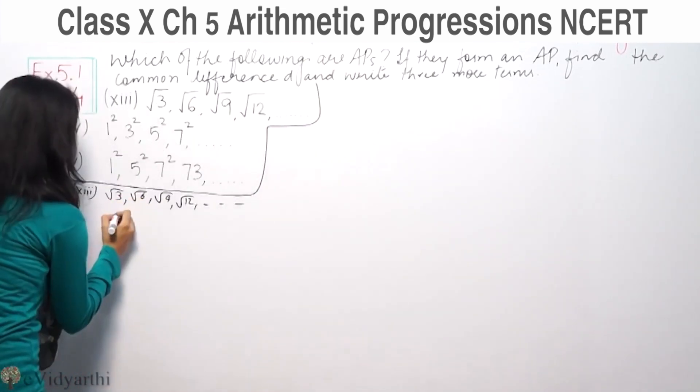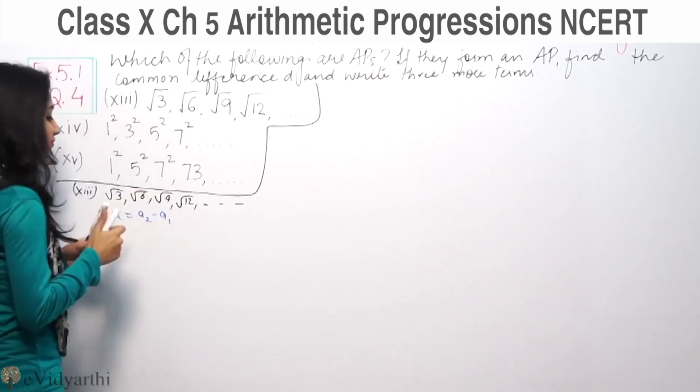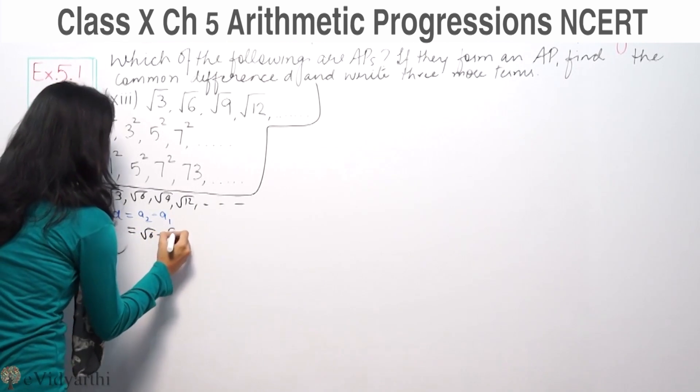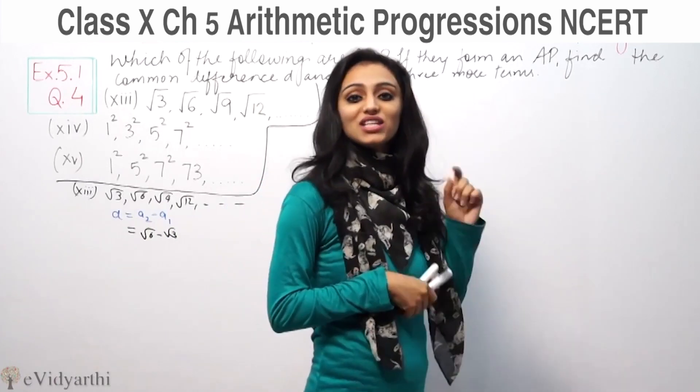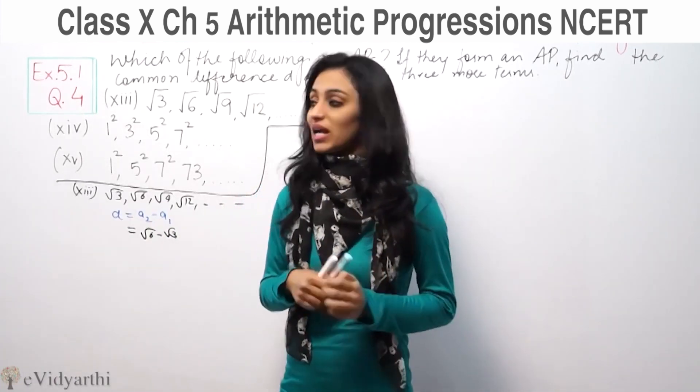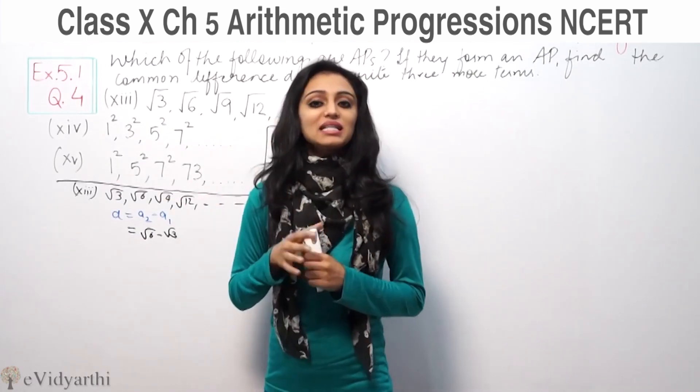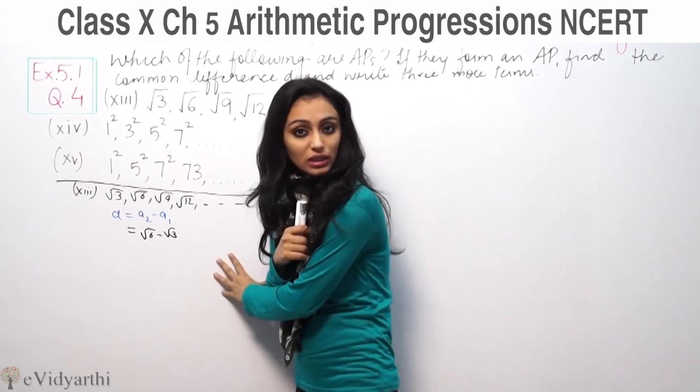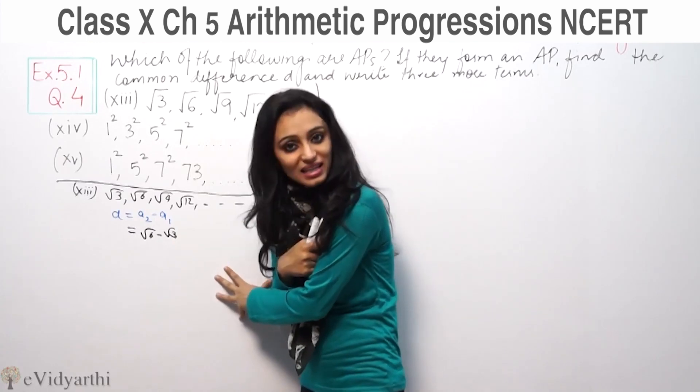So common difference D equals A2 minus A1. Second term is root 6, first term is root 3. Now, again the same thing if you have seen the last video. Many students write root 6 minus root 3 as root 3, but that's wrong. We cannot subtract different numbers under roots.